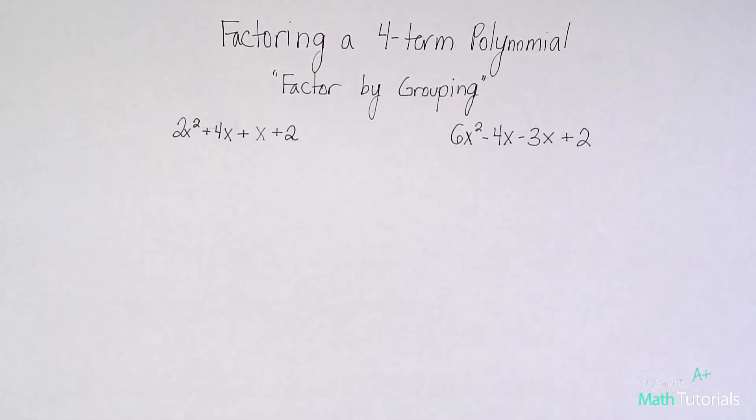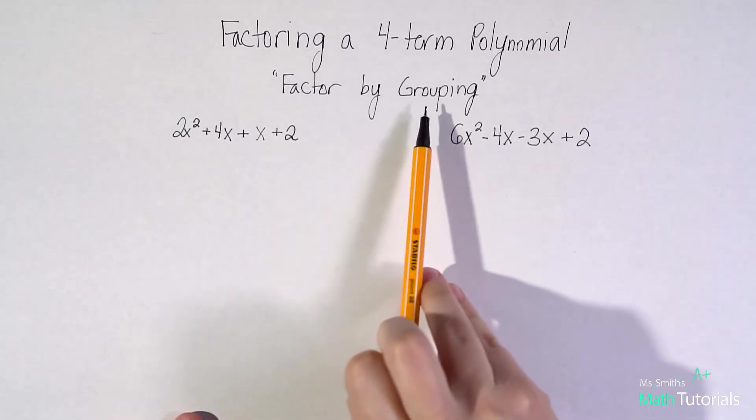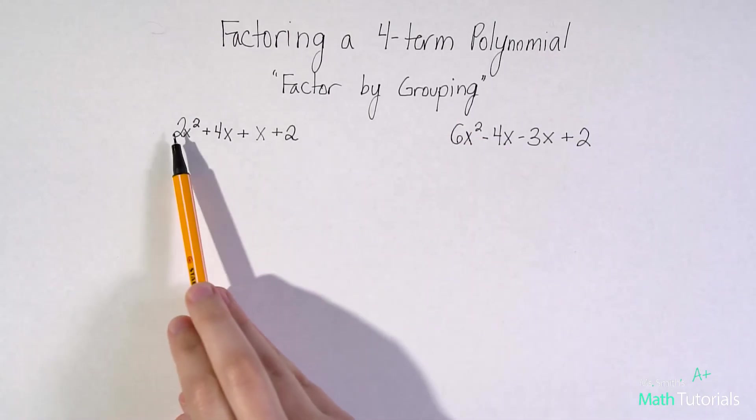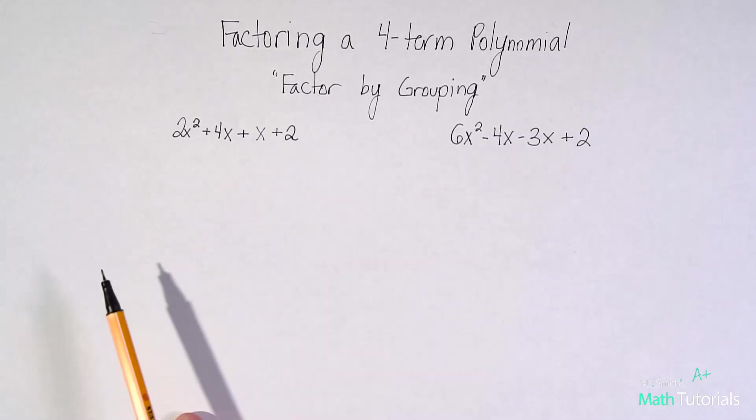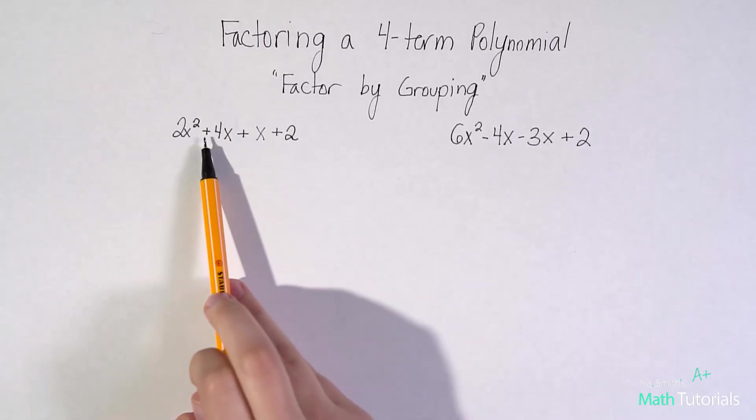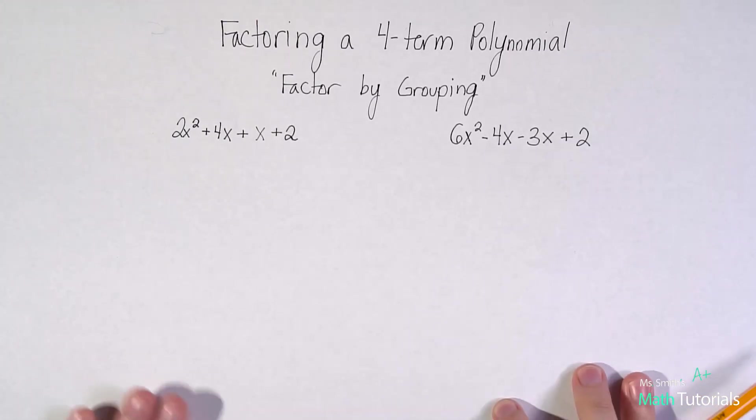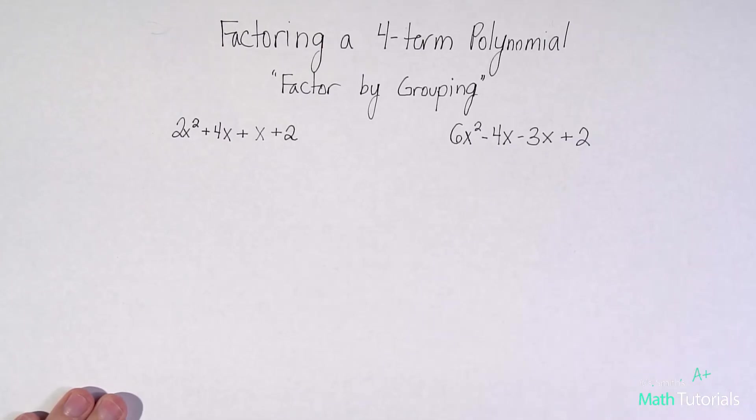How we factor four-term polynomials is a process called factor by grouping. Anytime you see a four-term polynomial, it's got four terms separated by adding or subtracting signs. We do this thing called factor by grouping. I'm going to walk you through the steps of it. Even though you'll have different numbers in every single problem, the steps are exactly the same.